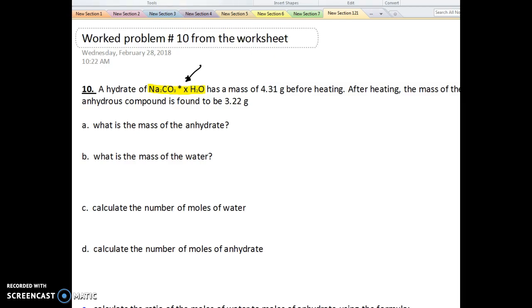And we have a mass of it before heating. Now, we're never going to use this mass directly in our calculations. We're going to use it to find some other information, so let's keep an eye on that. So these two are connected together. And then it says, after heating the mass of the anhydrous, which just means anhydrate, is 3.22.